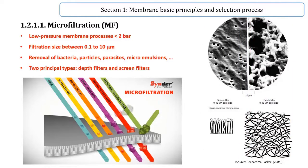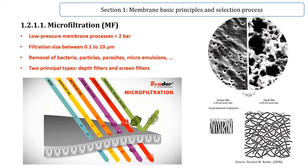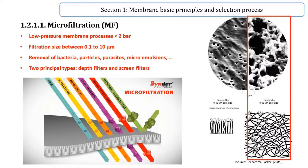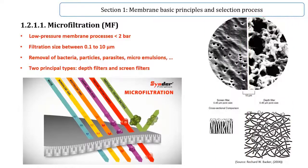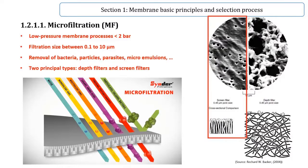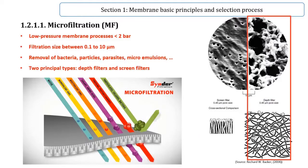Screen filter membranes rapidly become clogged by the accumulation of retained particles at the top surface. Depth filters have a much larger surface area available for the collection of particles, providing a larger holding capacity before fouling. Screen membrane filters are preferred for cross-flow microfiltration systems, but depth filters are usually preferred for dead-end operating mode.